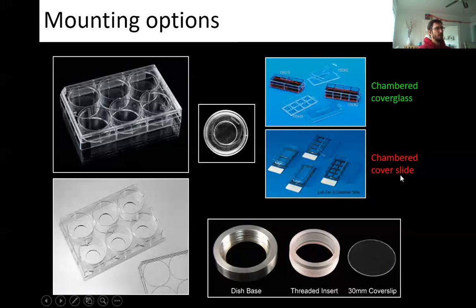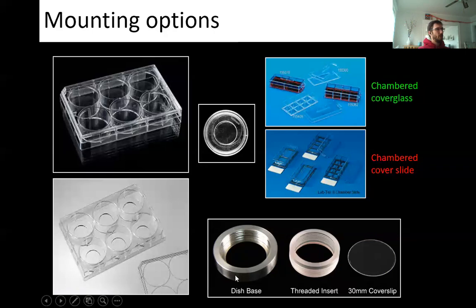Another option — which I've also seen made homemade — is a base that fits a round cover slip, with a rubber O-ring on top and a screw-in insert to create a sealed bottom. These are great because they're reusable and cover slips are cheap, making this a much more economical system than the 35 mm dishes, which are inexplicably expensive.